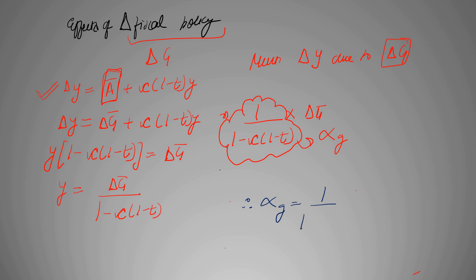Therefore, change in output due to change in government spending can be represented by this formula. And now we can understand it easily with help of a diagram, the same diagram.